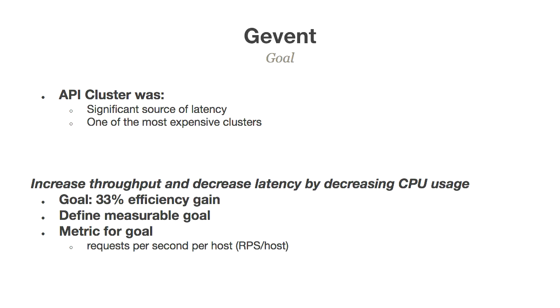The goal was to increase throughput and decrease latency by decreasing CPU usage — I could tell different people different things but do one piece of work and get twice the credit. We set a goal: make everything 33% more efficient. To measure that, we needed a clear definition. We tracked requests per second divided by number of hosts — requests per second per host. Since we autoscale on Amazon based on CPU usage, decreasing CPU usage directly increases throughput per host.